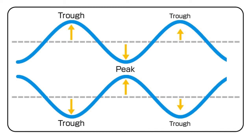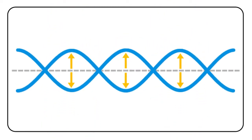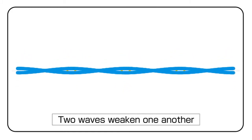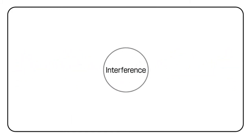Conversely, if the peaks and troughs overlap, they cancel each other out, and the waves become smaller. This is called interference.